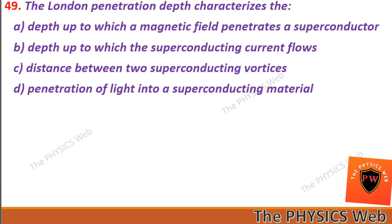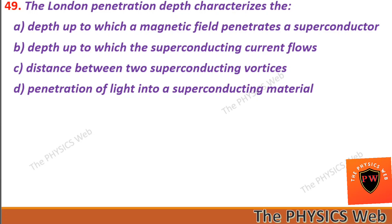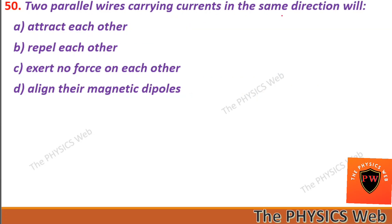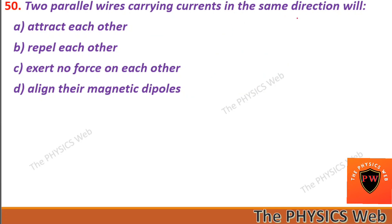These last two questions are for you — questions 49 and 50 — so write down your answers in the comment section. We have already discussed these above. Question 49 is: the London penetration depth characterizes the... and question 50 is: two parallel wires carrying currents in the same direction will...